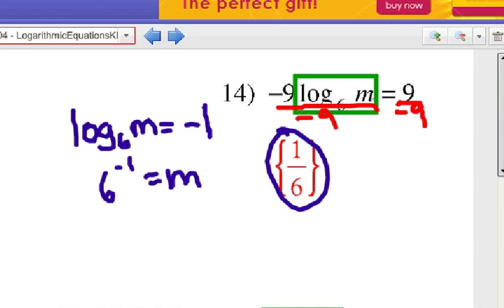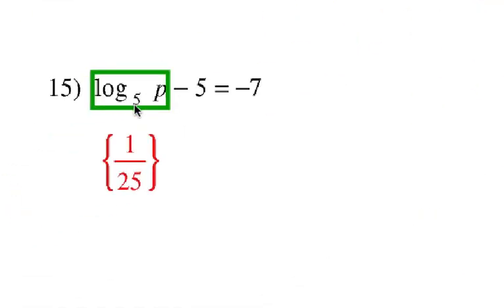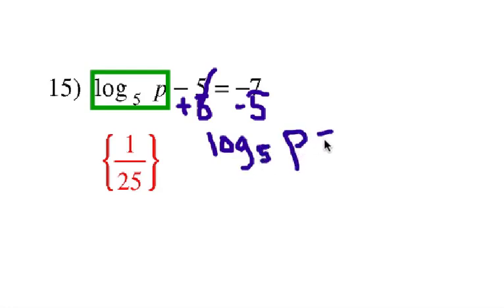Let's look at number 15. Log base 5 of p—there's your expression here. And outside of that, notice that you have a minus 5. So let's add 5 to each side. And that will give me log base 5 of p equals negative 12.